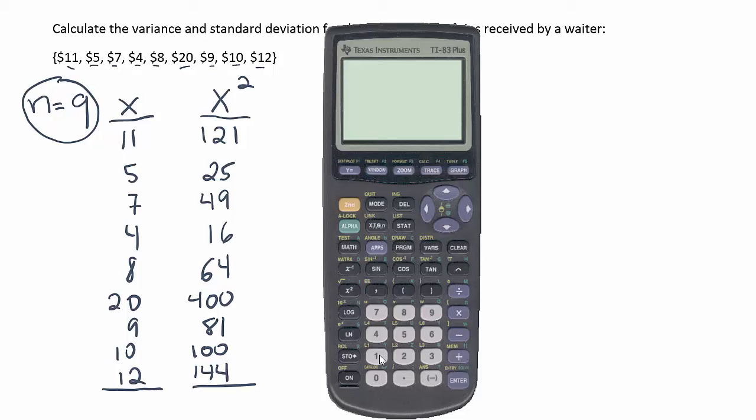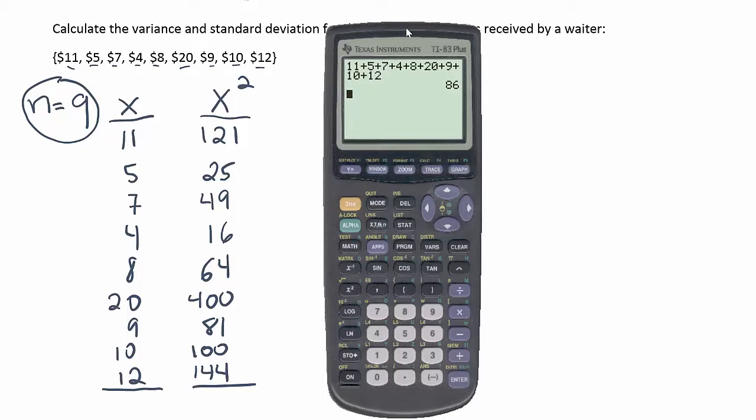The next step is to sum those columns and in other words, add all the numbers together in each column. Okay, so here we'll do that. 11 plus 5 plus 7 plus 4 plus 8 plus 20 plus 9 plus 10 plus 12. Okay, so just give a quick look to make sure you put everything in correctly and then press enter and you have your answer 86. That's the first sum.